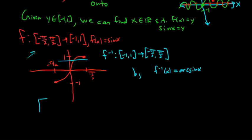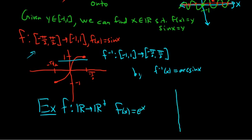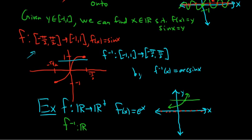One more example. Say we have f from the set of real numbers to the set of positive real numbers, defined by f of x equals e to the x. The graph of e to the x has a horizontal asymptote at 0. It passes the horizontal line test, so it's one-to-one, and it's onto. So it has an inverse function, defined from the positive reals to the reals, and the inverse function is the natural logarithm of x — that's the inverse of e to the x.